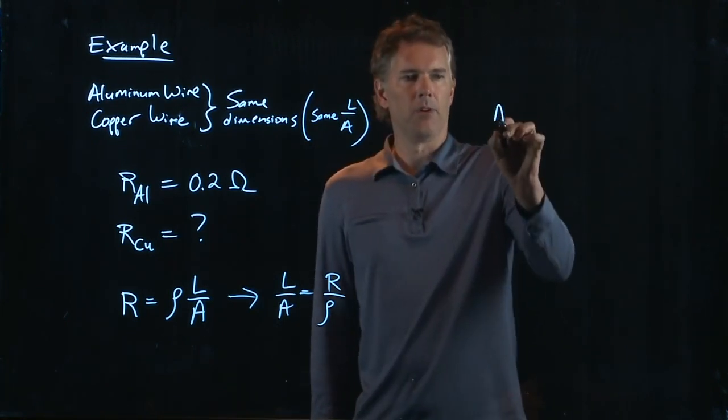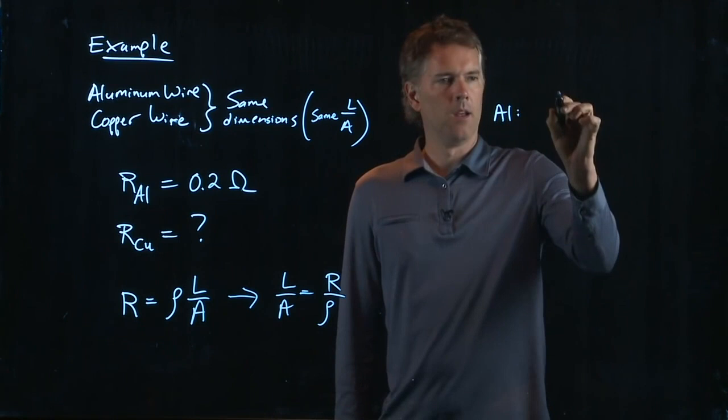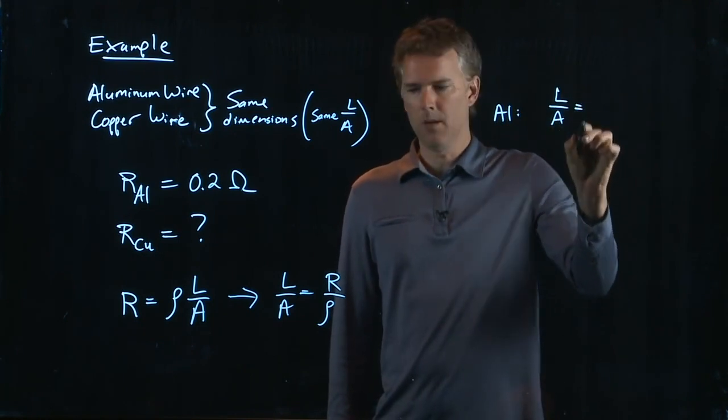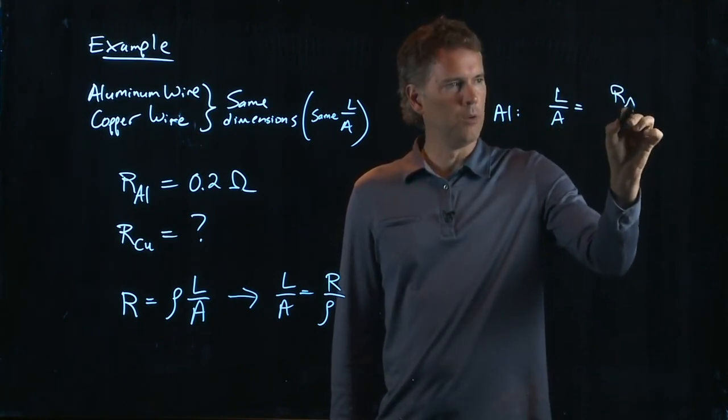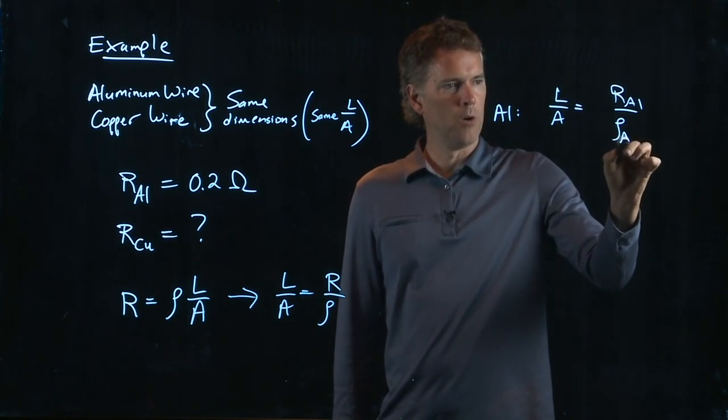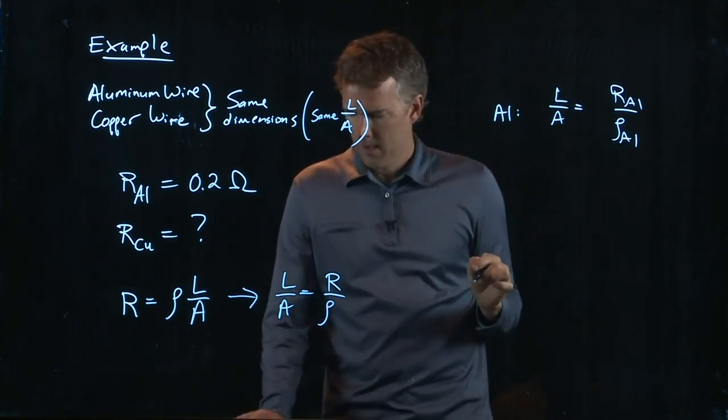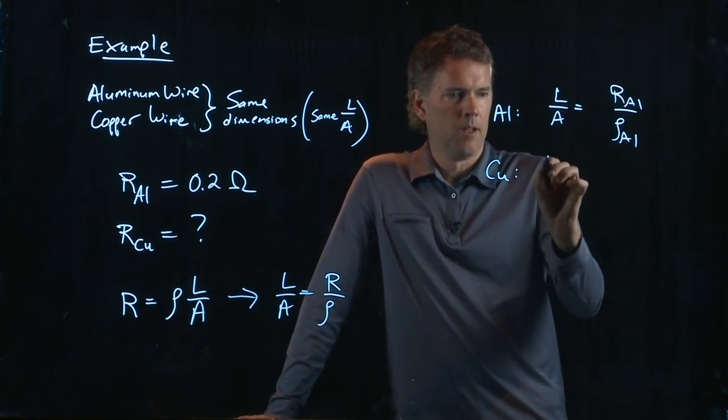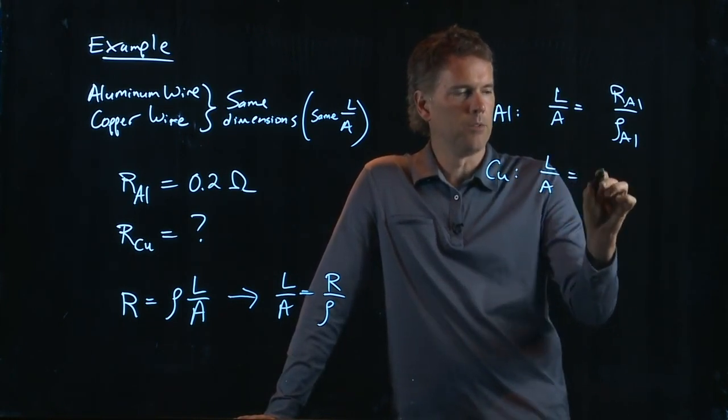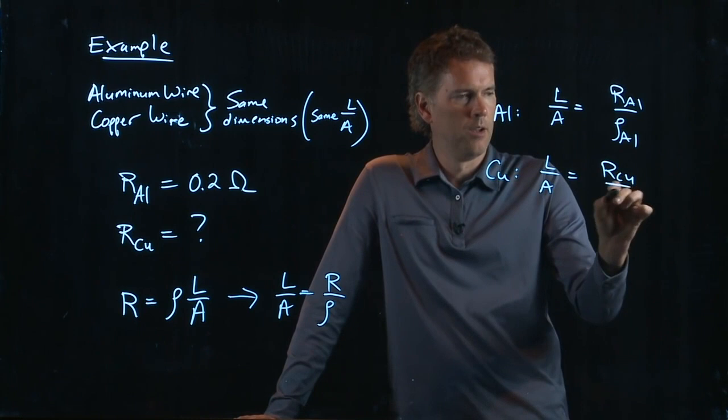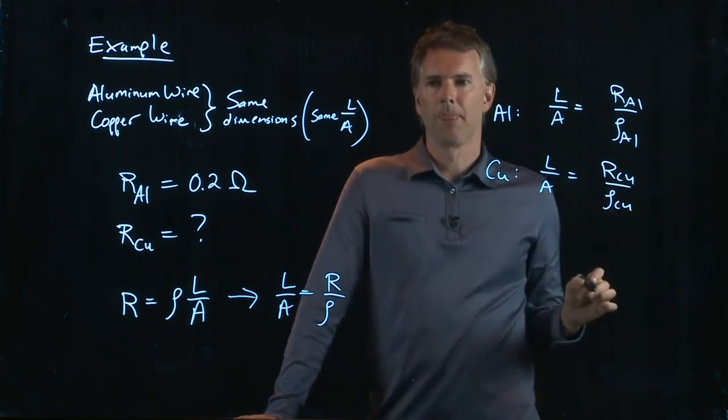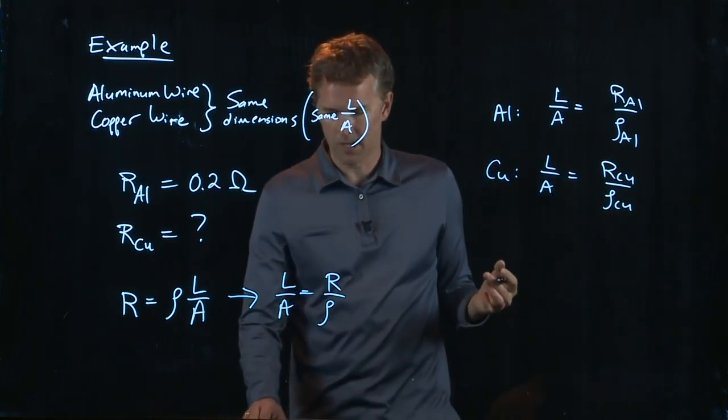And now we can write this for aluminum. L over A equals R for aluminum over rho for aluminum. And for copper, L over A is equal to R for copper over rho for copper. And now we can put these things together.